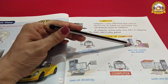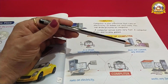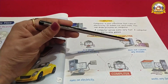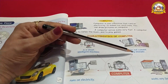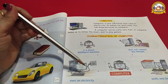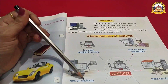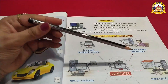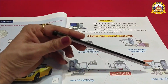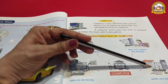Computer does not commit any mistake. Human beings make mistakes, but computer does not make any mistake. It runs on electricity. Computer किस से work करता है? Electricity से। यह बहुत fast work करता है — computer works very fast.